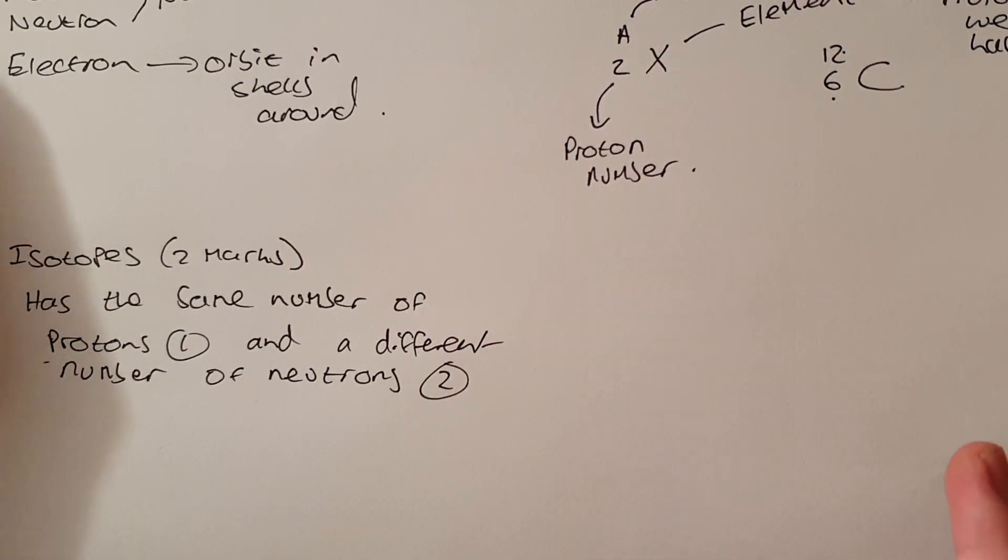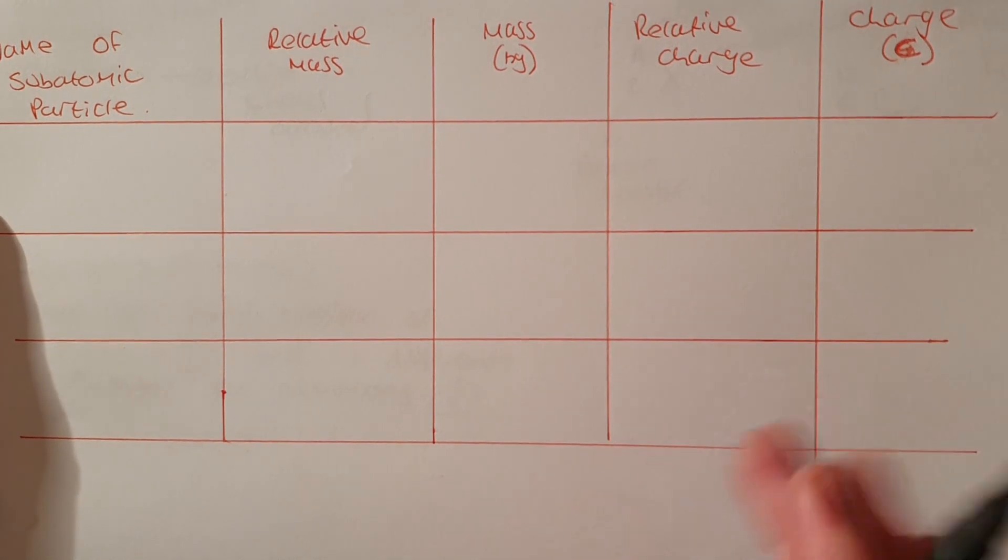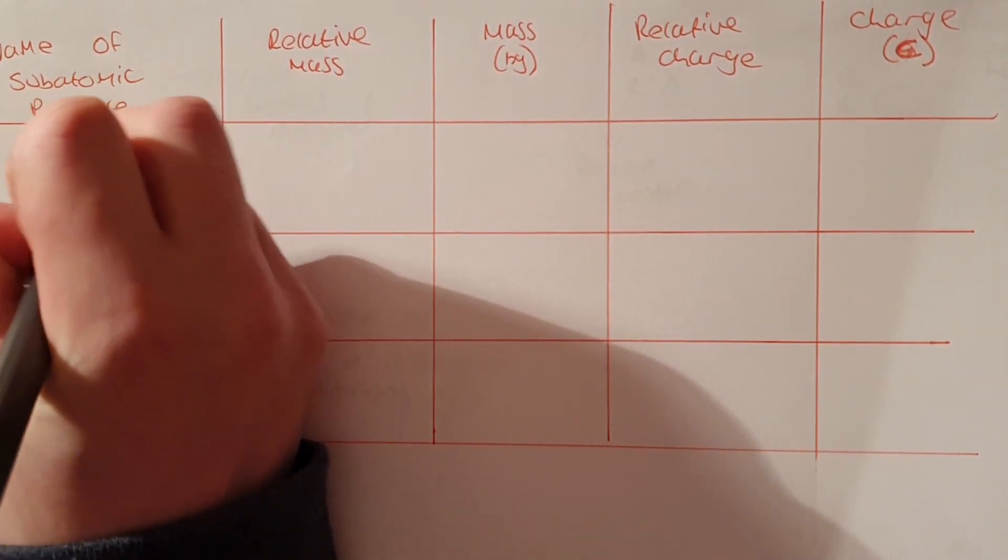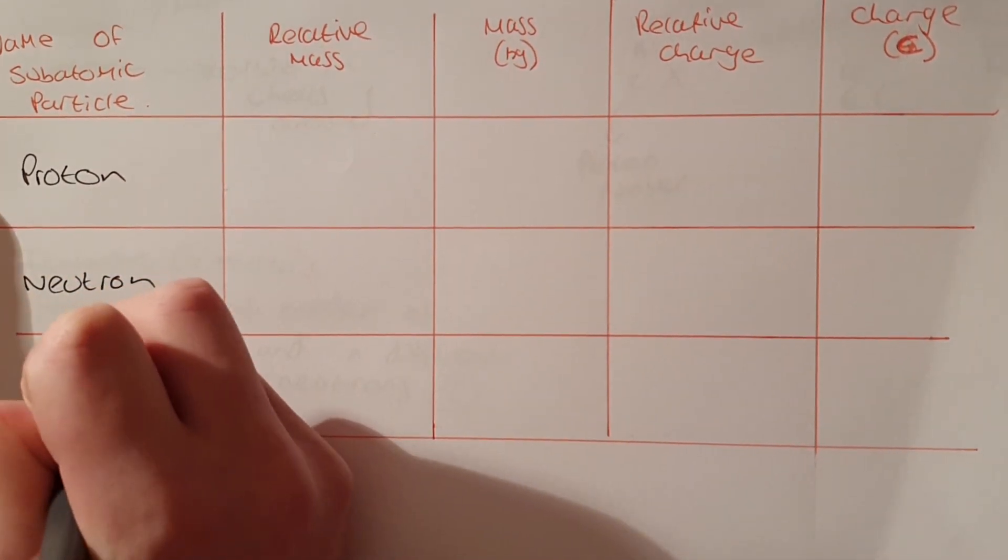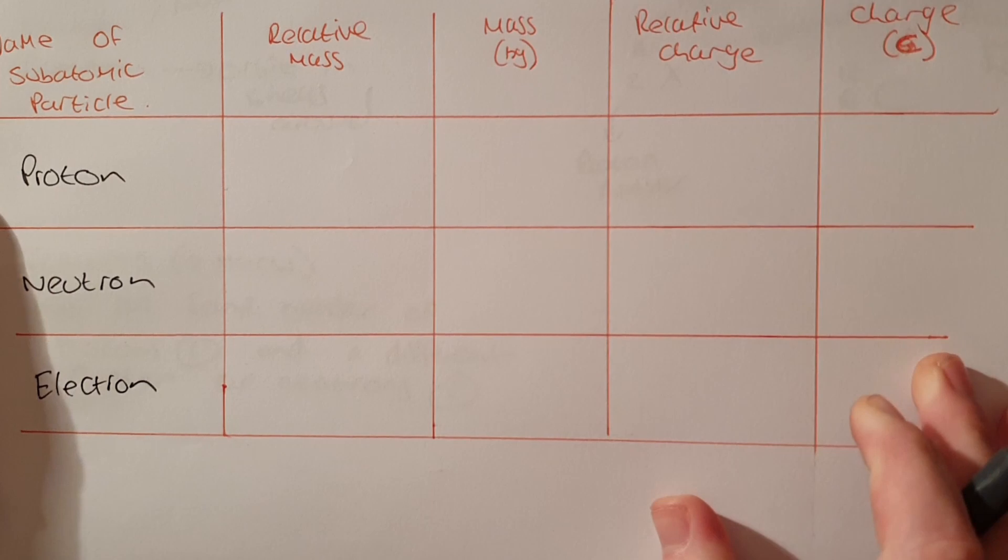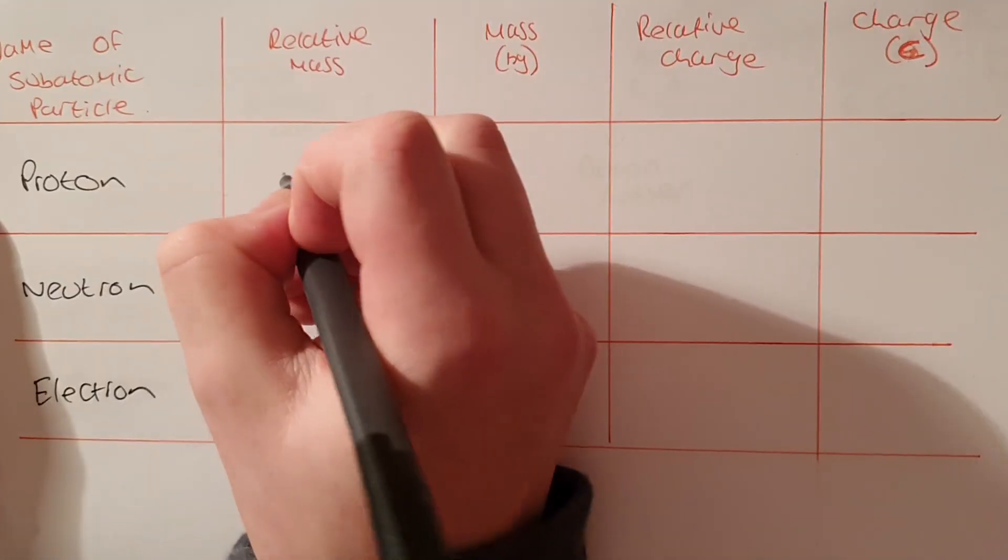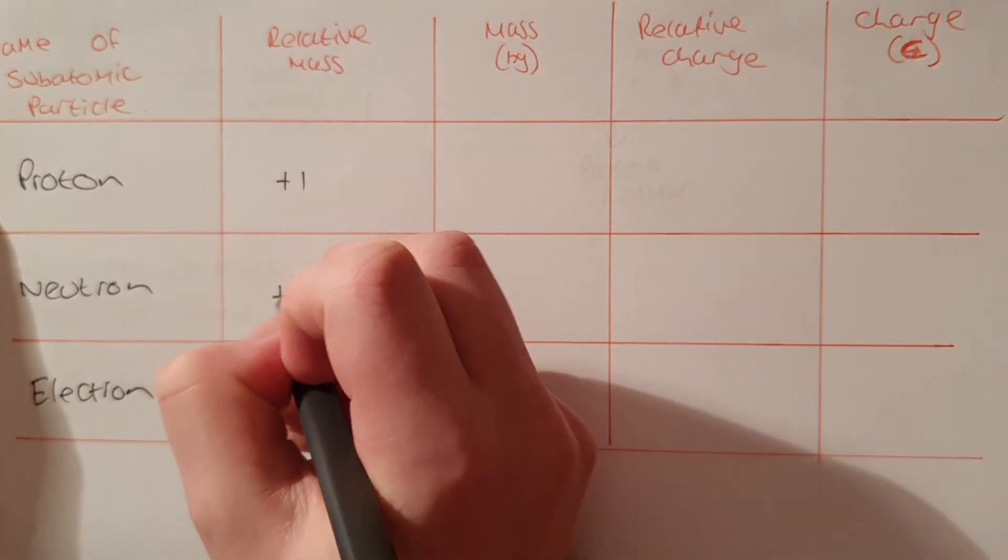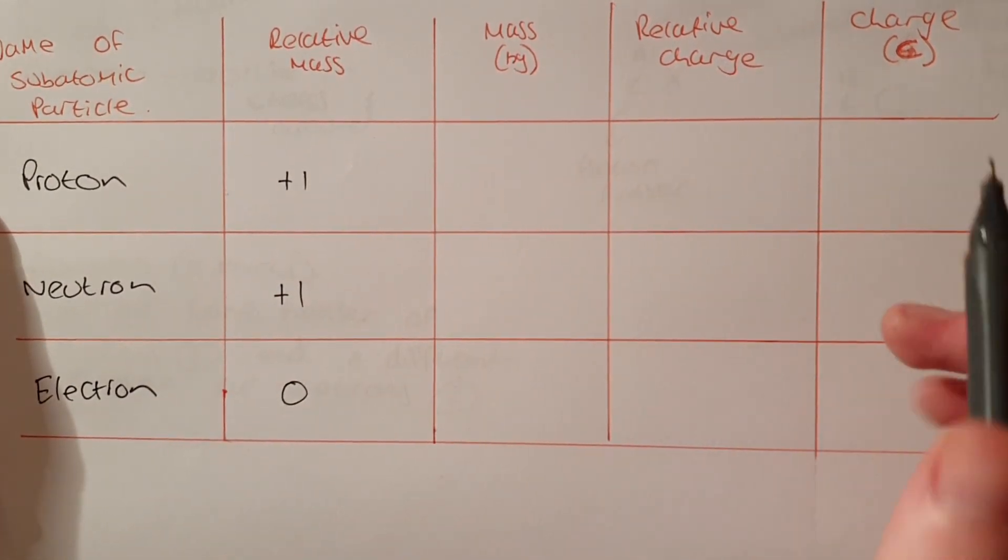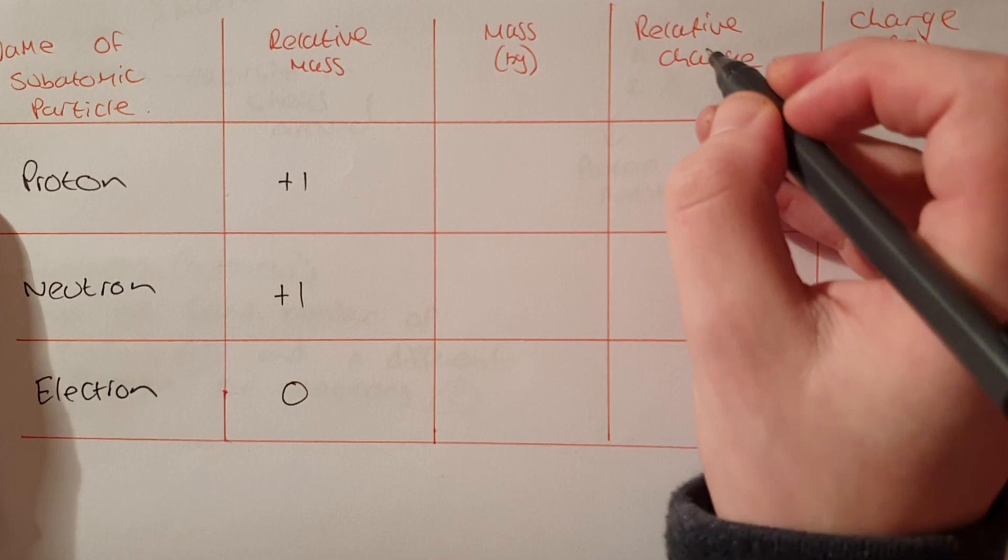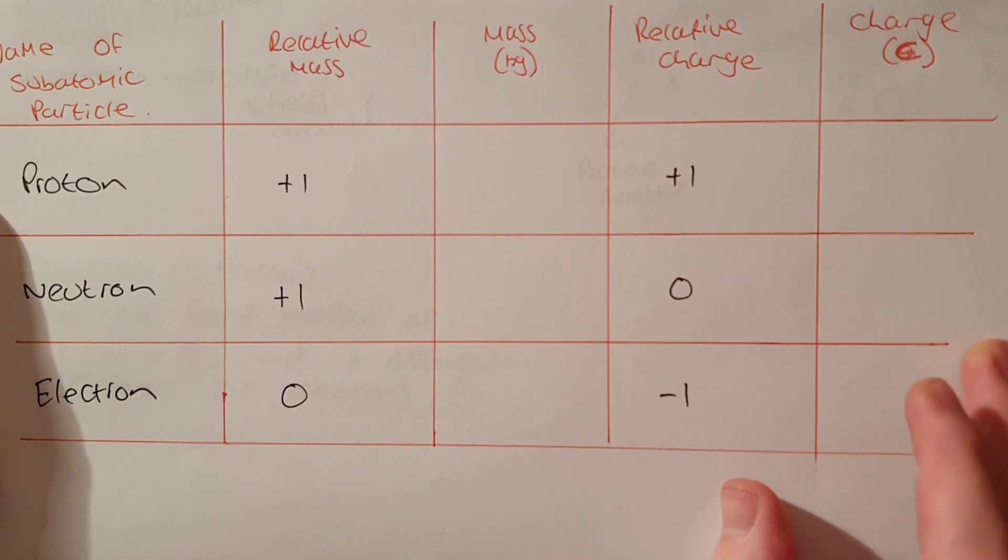Now from GCSE you will often talk about these three subatomic particles all of the time and I've just created this table before I started the video today. We know we have a proton, we know we have the neutron, and we know we have an electron. Now at GCSE we talk about relative mass and relative charge. We know the relative mass of a proton is plus one, the neutron is plus one, and we often say that the electron is negligible. We talk about the charge of a proton of plus one, the neutron of zero because it's neutral, and an electron as minus one.